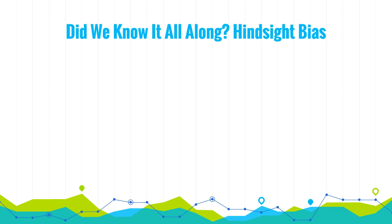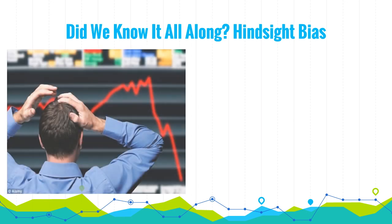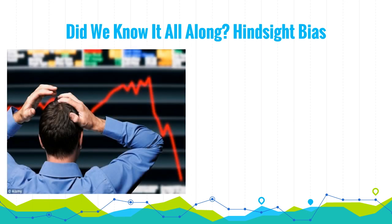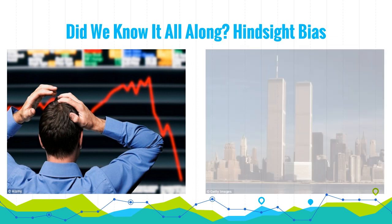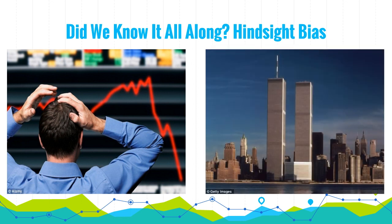We have two examples of this. The first can be seen in a stock market crash. When everyone sells their stocks, it can be easy looking back to see why you bought them — it was obviously going to fail. But at the moment, they would seem successful and you'd want to buy them. Another example is terrorist attacks. Looking back, it seems obvious that terrorists would exploit the lack of airport checks and no-fly lists. But at the time, that was simply the way things were done.